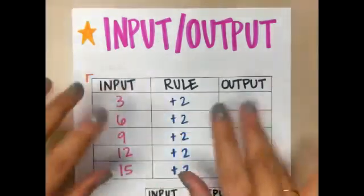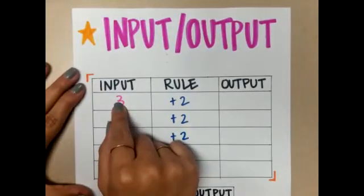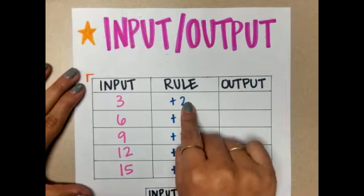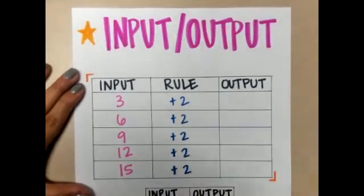So let's pretend this is a machine. I'm putting in the number 3. I'm going to follow the rule. And once I follow that rule, I'm going to get an output number, the number that comes out.